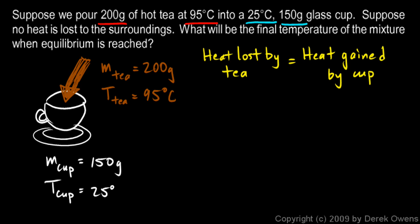And mathematically, we would set that up like this. The heat lost by the tea, let's look at the left side first. That would be the mass of the tea times the C of the tea times the delta T of the tea. That's the change in temperature of the tea. And that will equal the heat gained by the cup, which is also MC delta T.